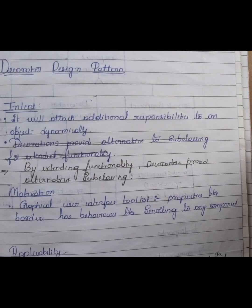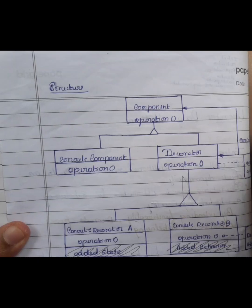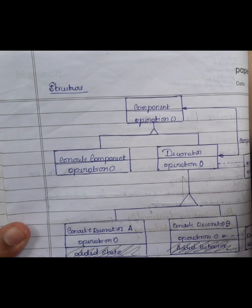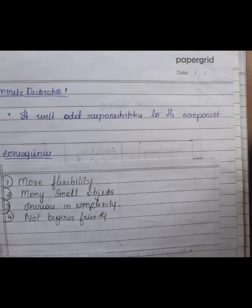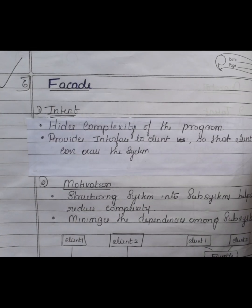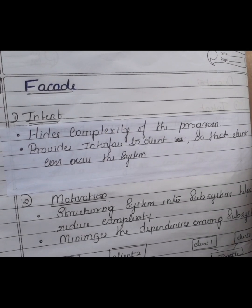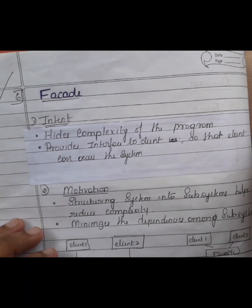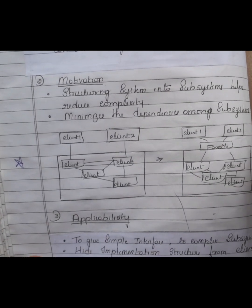Next is the Decorator design pattern — cover intent, motivation, applicability, structure, participants, consequences, and implementation. Next comes Facade, where you also need to mention intent, motivation, applicability, participants, consequences, and implementation.